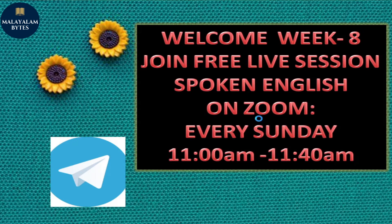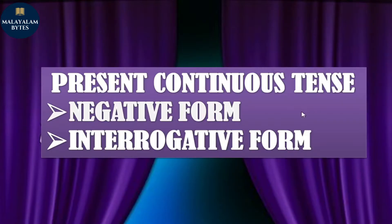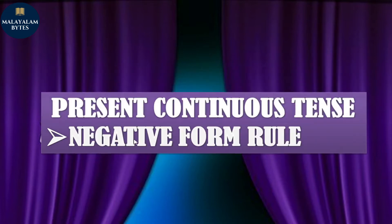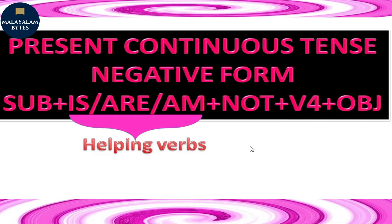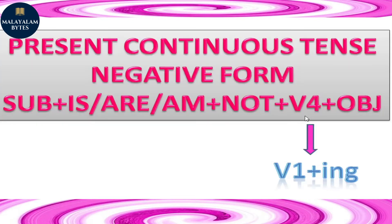Friends, today our topic is present continuous tense - the negative and interrogative forms. So why wait? Let's get started. The negative form rule is: subject plus is/am/are plus not plus fourth form of the verb plus object. The fourth form of the verb means first form plus -ing.